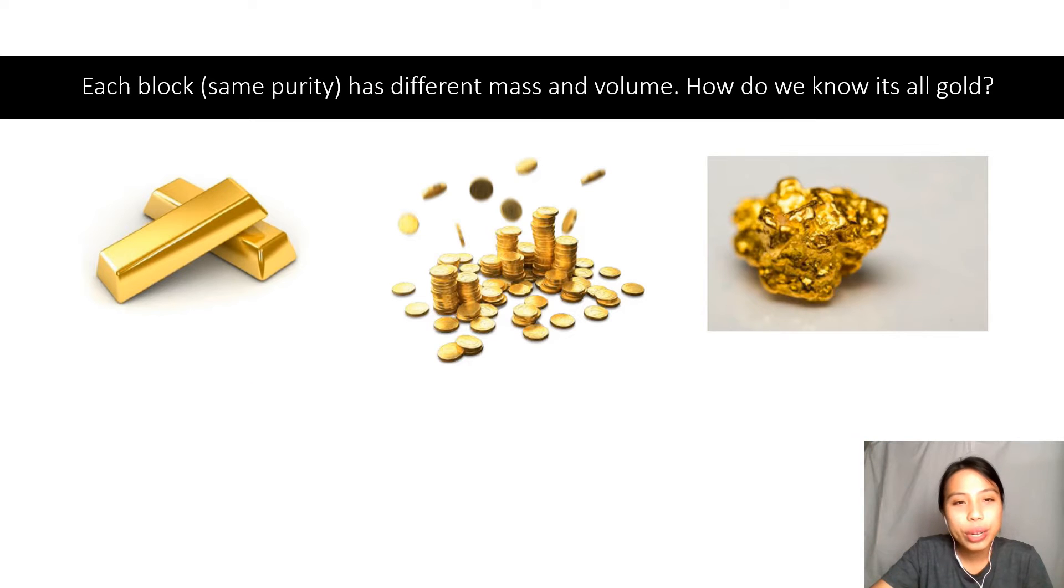First question of today. Let's say I'm super rich, I have three types of gold, same purity. The first one's a gold bar shaped like a cuboid. The second one are coins shaped like circles, much lighter than the gold bar. And the third one is a nugget, odd shape, weird volume, mass - who knows what. Among all these, they have all different mass and different volume.